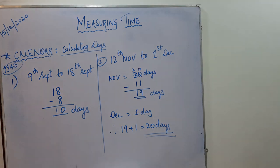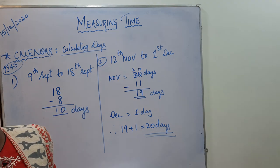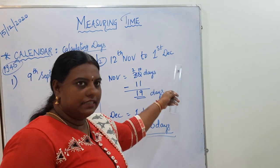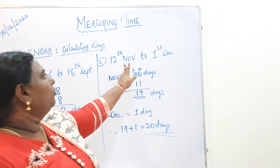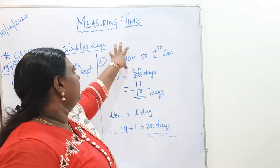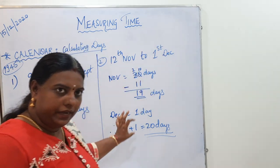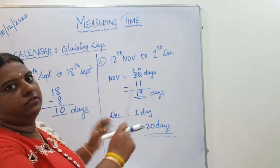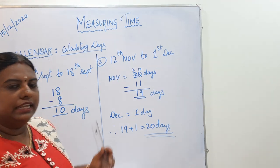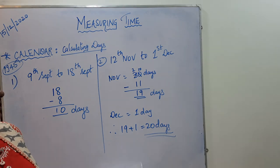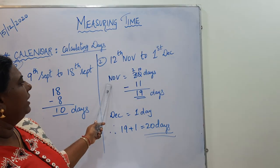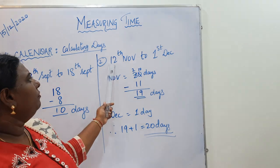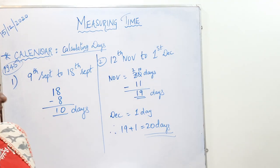So when months are different: calculate November separately and December separately, then add both answers. Seema went to her hometown on 12th November and stayed till 1st December. November gave us 19 days, December gave us 1 day, total 20 days. Remember: when taking the number of days for a month, subtract one number less than the starting date.